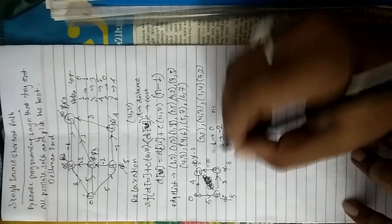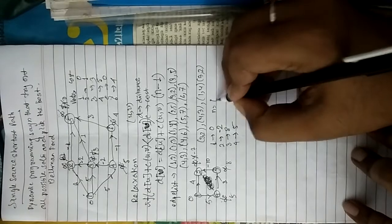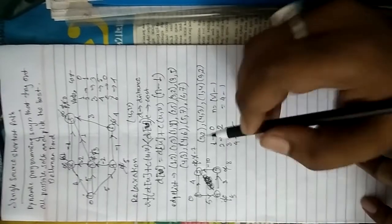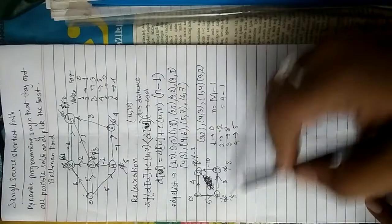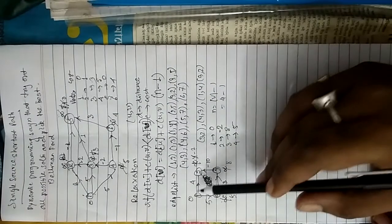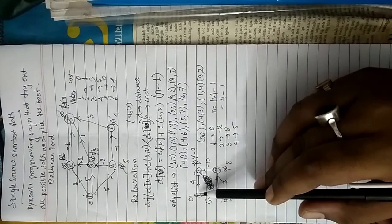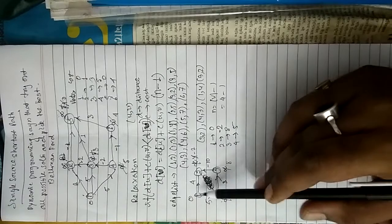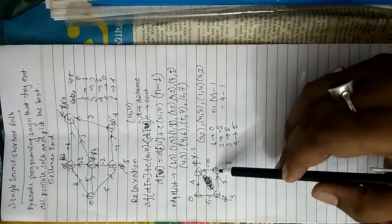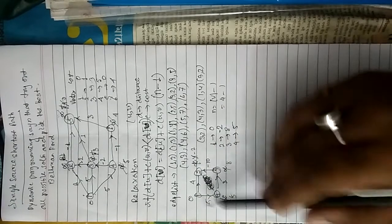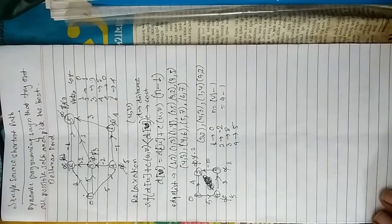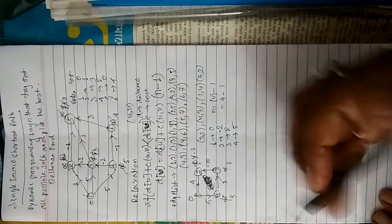Final values: node 1 is zero, node 2 is minus two, node 3 is eight, node 4 is five. We need to relax n minus one times, where n is number of vertices — four minus one equals three times. So you repeat the relaxation three times starting from each edge.